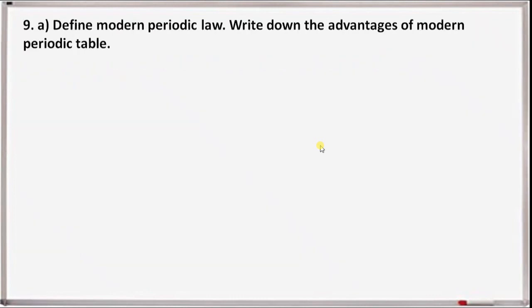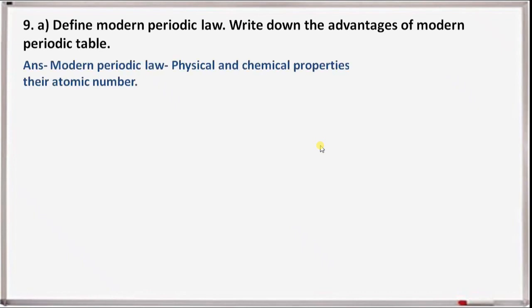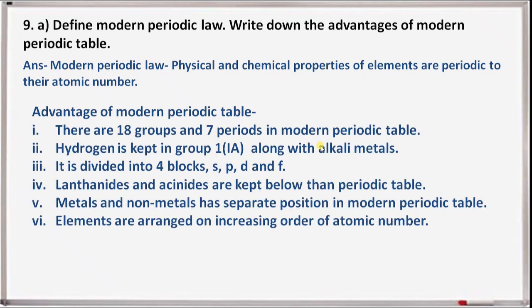Next question 9a: define modern periodic law and write down the advantages of the modern periodic table. Modern periodic law: the physical and chemical properties of elements are periodic functions of their atomic number. Advantages: there are 18 groups and 7 periods in the modern periodic table. Hydrogen is kept in Group 1 or Ia along with alkali metals. It is divided into 4 blocks: S, P, D, and F. Lanthanides and actinides are kept below the periodic table. Metals and non-metals have separate positions. Elements are arranged in increasing order of atomic number.